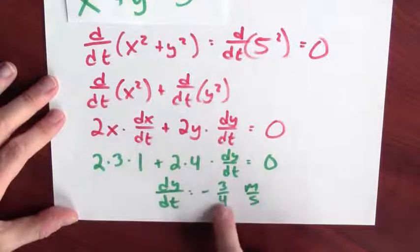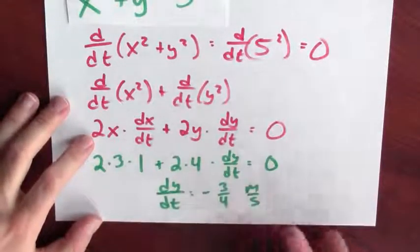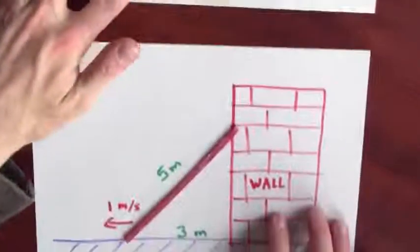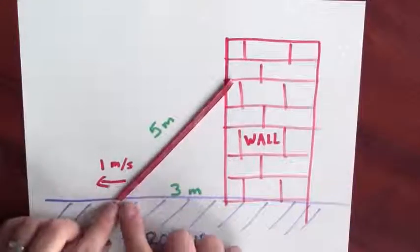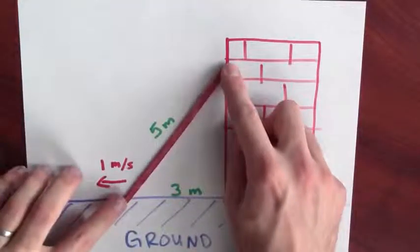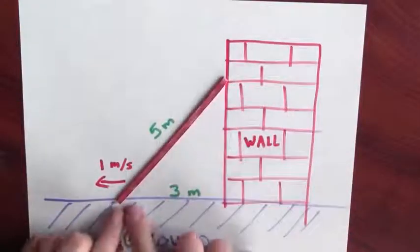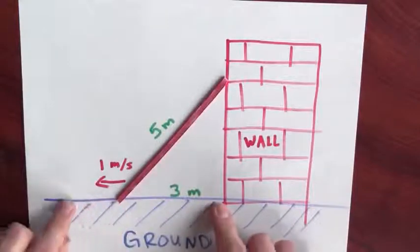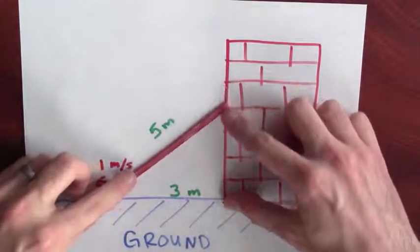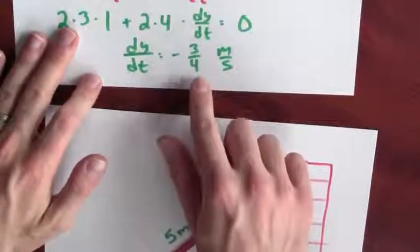Does the sign of that answer make sense? So yeah, does it make sense that this is negative 3/4 of a meter per second? Well, take a look at our picture, right? I'm pulling the bottom of the ladder this way. So I'm moving the bottom of the ladder this way, and as I do that, the top of the ladder moves down the side of the building. So as this distance, which is x, is increasing, this distance, which is y, is decreasing. And so yeah, it totally makes sense that dy/dt is negative.